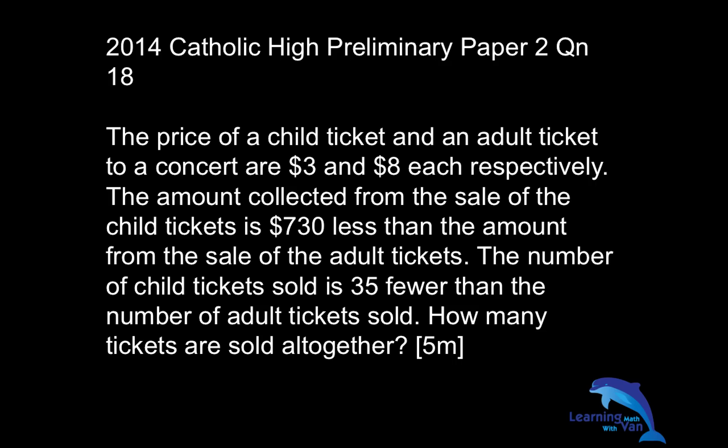Let's take a look at this question. This is adapted from the 2014 Catholic High Preliminary Paper 2 Question 18. The price of a child ticket and an adult ticket to a concert are $3 and $8 each respectively. The amount collected from the sale of the child tickets is $730 less than the amount from the sale of the adult tickets. The number of child tickets sold is 35 fewer than the number of adult tickets sold. How many tickets are sold altogether?